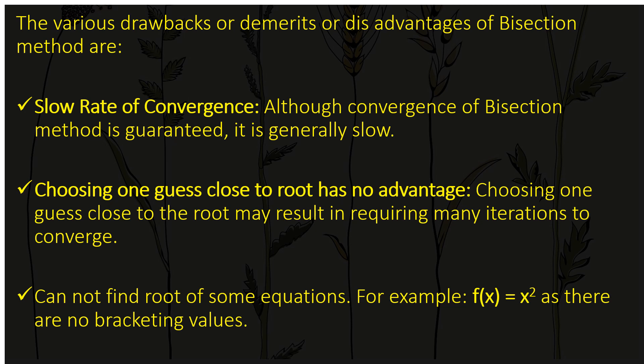The next demerit is that choosing one guess close to the root has no advantage — it may result in requiring many iterations to converge. We need two or even three guesses that are very near to the root. The third disadvantage is it cannot find the root of some equations — for example, if f(x) = x², there are no bracketing values, so we cannot find the root for that equation.